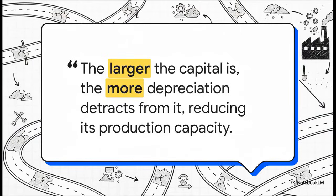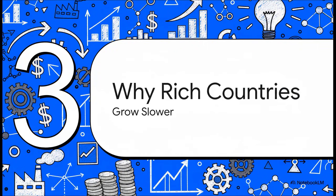And that leads to a really simple but profound conclusion: the more stuff you have, the more stuff breaks. A small country with just one highway doesn't have a big repair bill. But a huge developed country with a massive network of roads and power grids — their maintenance bill is gigantic. That depreciation is a constant, massive drag on their economy. And with just that one simple idea, we have everything we need to finally crack the code on our original question.